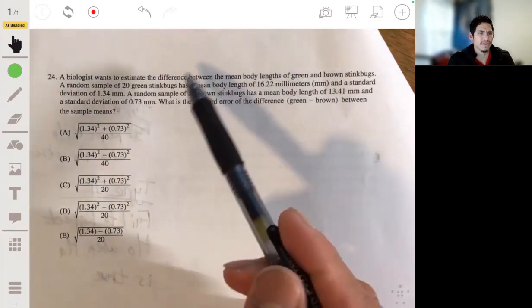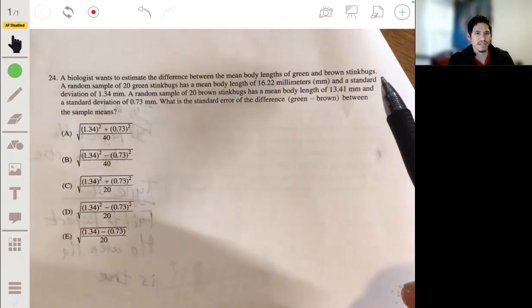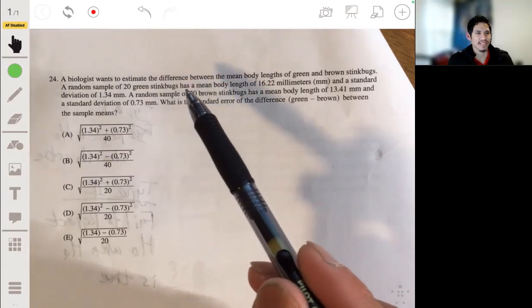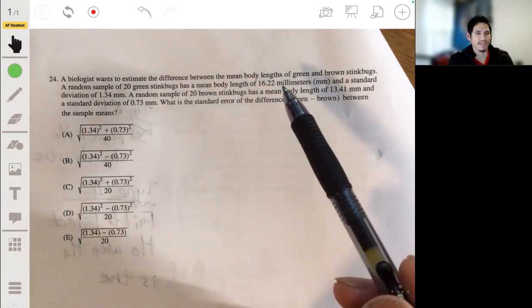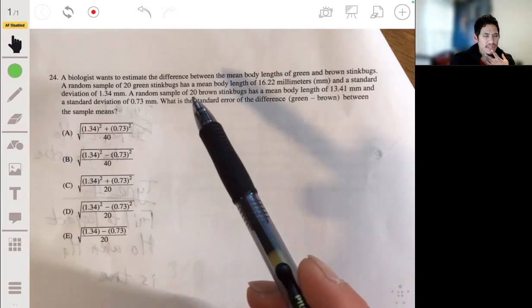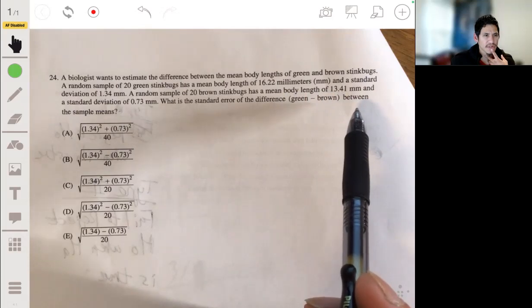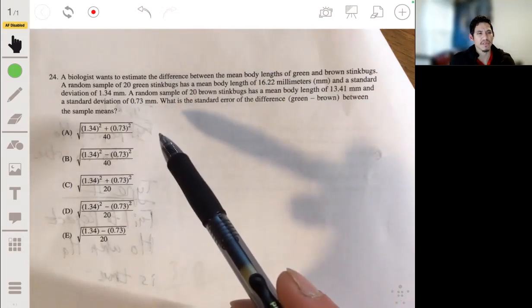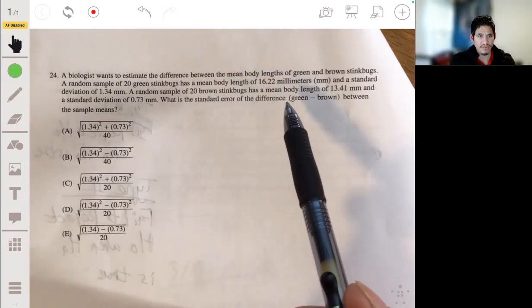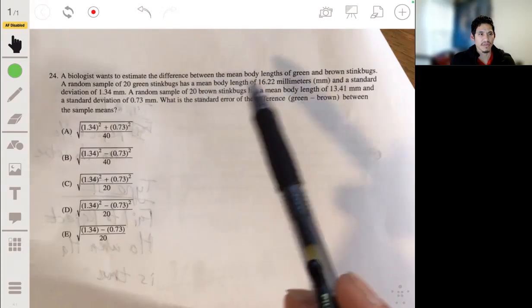A random sample of 20 green stink bugs has a mean body length of 16.22 millimeters and a standard deviation of 1.34 millimeters. A random sample of 20 brown stink bugs has a mean body length of 13.41 millimeters and a standard deviation of 0.72 millimeters. What is the standard error of the difference, green minus brown, between the sample?